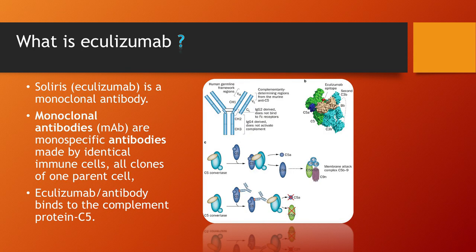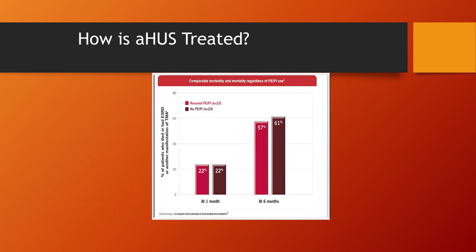So what is eculizumab? It's a monoclonal antibody — mono meaning one specific — made by identical immune cells that are all clones from a parent cell. It binds to the complement C5 protein and lasts about two weeks. They have a new version coming available soon that lasts a month, so the therapy frequency will change. Basically, for HUS treated with eculizumab, the outcomes are the same for those who had plasma exchange and those who didn't.